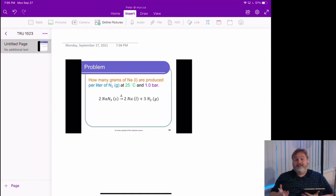In this problem, we're going to connect the idea that we can use the ideal gas law to figure out an amount of gas to reaction stoichiometry and as part of solving a chemical balanced equation problem. Here we have: how many grams of liquid sodium are produced per liter of nitrogen gas at 25 degrees Celsius and 1.0 bar for this particular reaction? Two sodium nitride gives us two sodium liquid and three nitrogen gas.